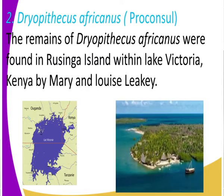Now can you get to locate where Rusinga Island is? As I told you, this is dry land that is surrounded by water. So in our second image you can see Lake Victoria, and it surrounds a dry land. That is the Rusinga Island where Diopithecus africanus was first discovered.